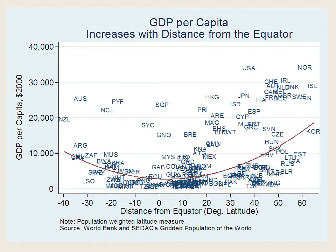Naturally, there are exceptions. This is Singapore, which has excellent institutions and manages to avoid the rule — an exception. Here is Hong Kong. This is Equatorial New Guinea, which has lousy institutions but is nevertheless quite rich per capita, although the inequality is extreme, because it has a lot of oil.